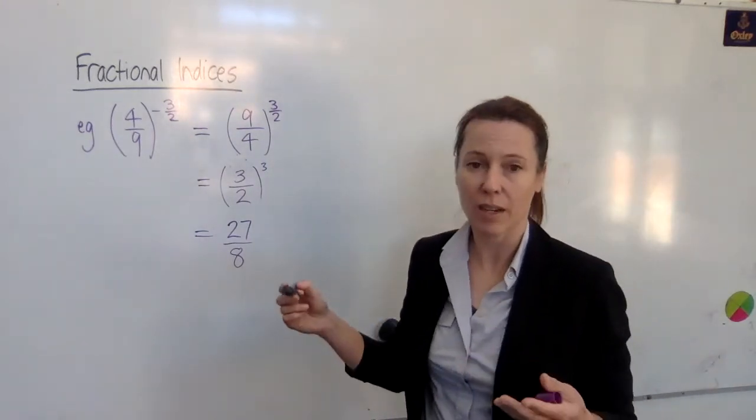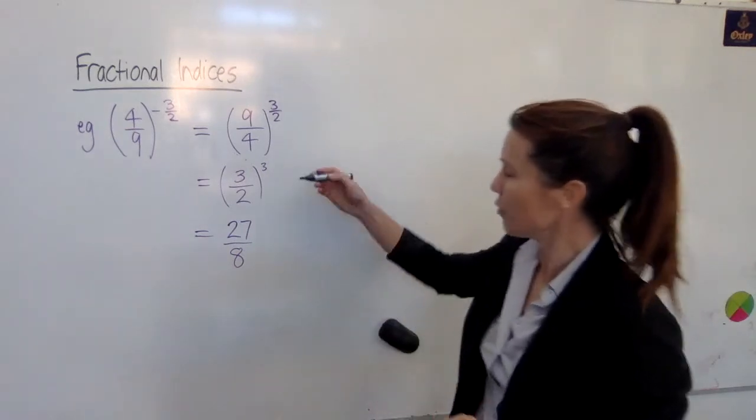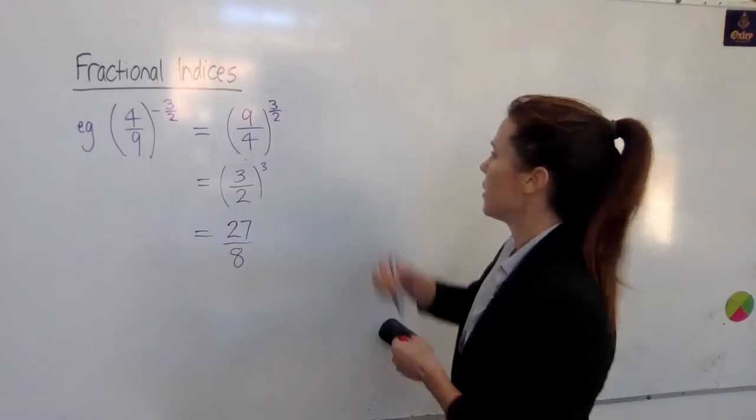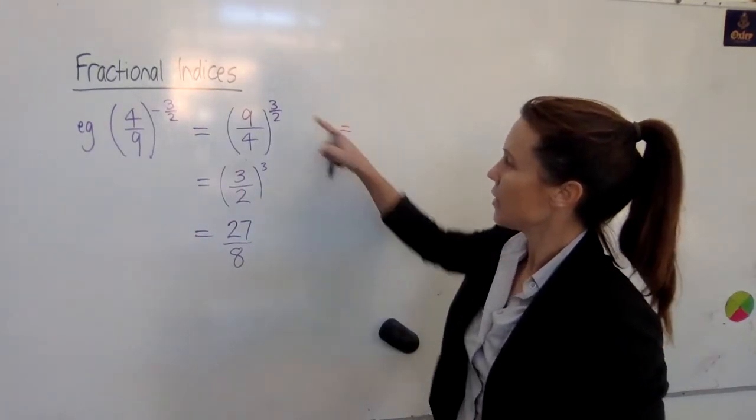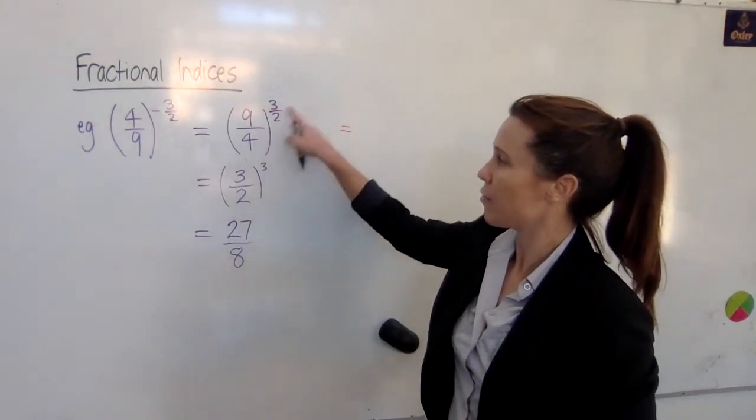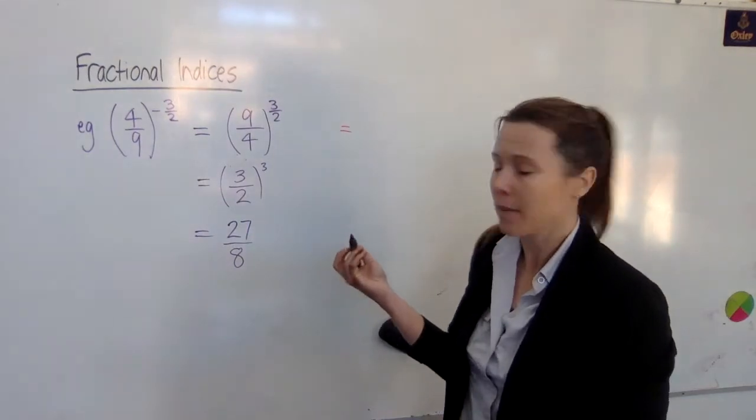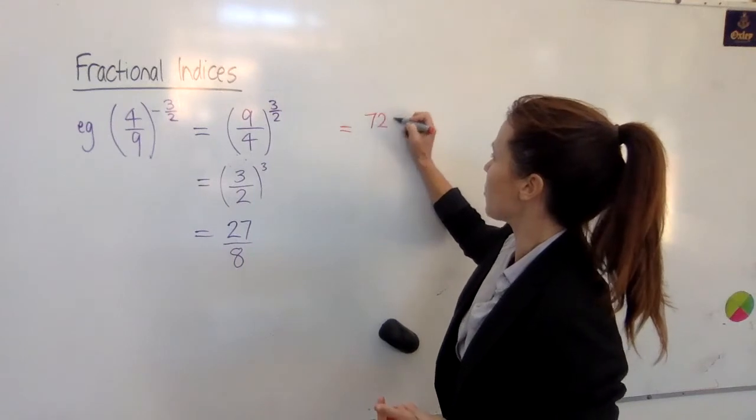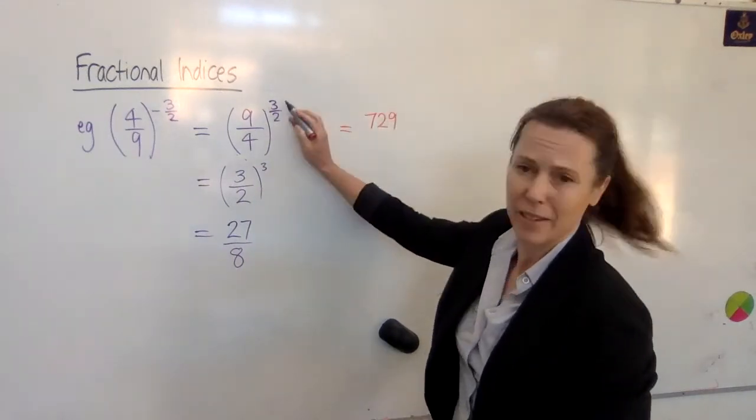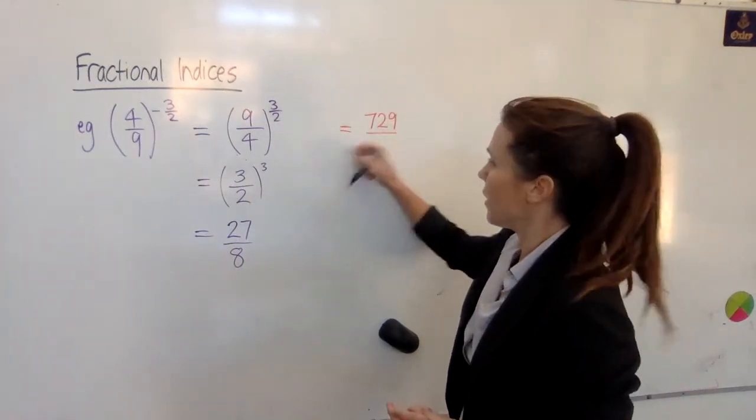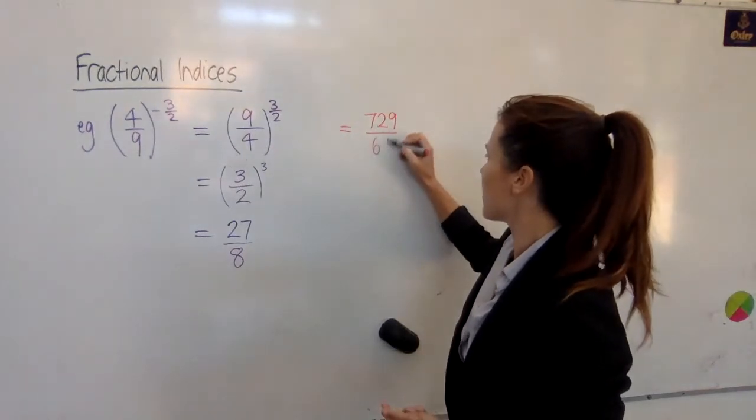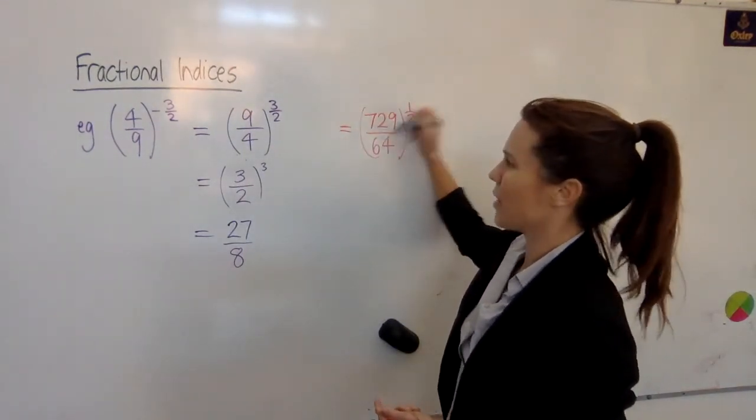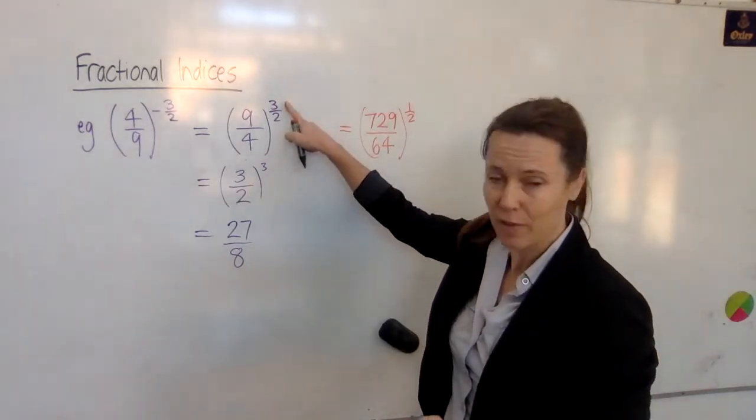Of course, at this point, if we come over here, if we had decided instead to raise the nine and the four to the power of three first, then we would have ended up with seven hundred and twenty-nine on the top because that's nine cubed, and on the bottom we'd have four cubed which is 64, and we'd have all of that still raised to the power of a half. So in that way we would have taken care of the three first and still the half is to go.